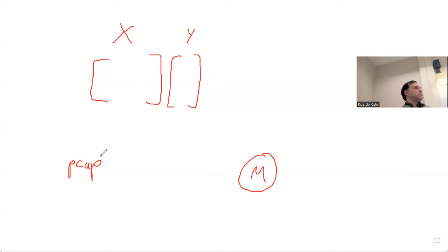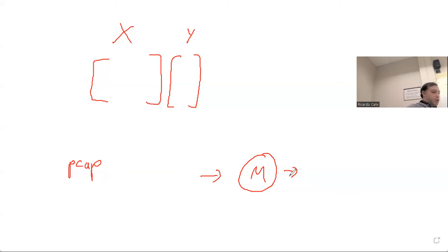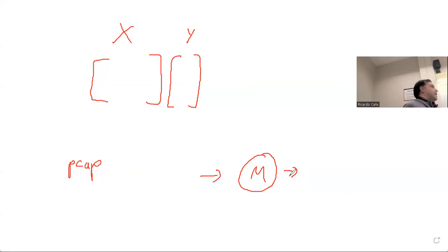We have inputs going in and outputs for the model. What are the outputs? It could be different types of attacks - that's a perfectly good one. Or it's perfectly fine if you just say 'attack' or 'not attack.' I would go with that because it's easier to think about. So: attack and not attack - let's say zero and one. You really just have a classifier that says it's a zero or a one.